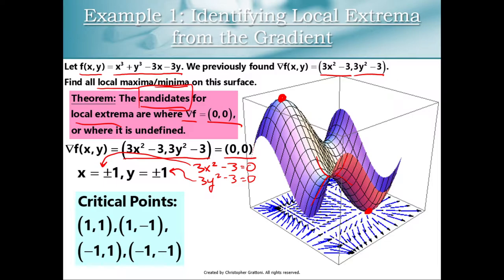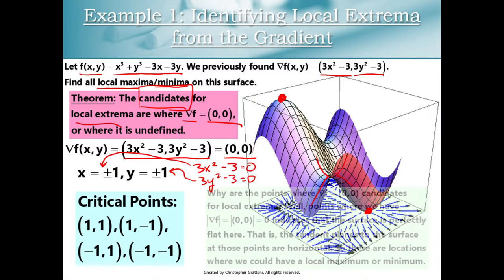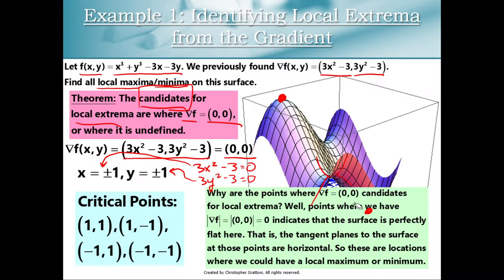I need to investigate further to figure out what's happening at those four critical points. A common question is: why are we setting the gradient vector equal to (0,0)? Why does that give us our candidates for places where we might have a local max or min?